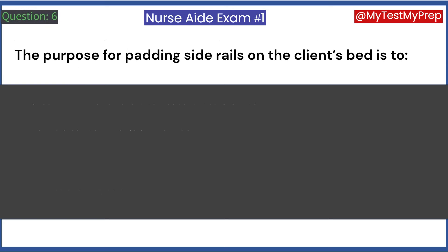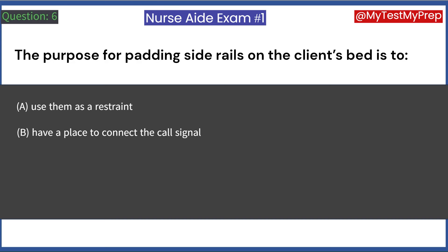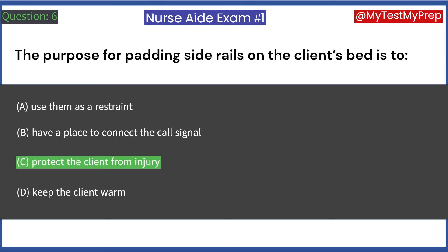The purpose for padding side rails on the client's bed is to: A. Use them as a restraint. B. Have a place to connect the call signal. C. Protect the client from injury. D. Keep the client warm. Answer: C. Protect the client from injury.